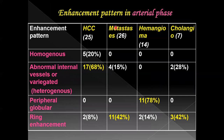Summary of enhancement patterns in the arterial phase: For HCC, the most common pattern was heterogeneous enhancement, seen in 68% of cases. For metastasis, it was ring enhancement in 42%. For hemangioma, it was peripheral globular enhancement in 78%. For cholangiocarcinoma, it was ring enhancement in 42%.